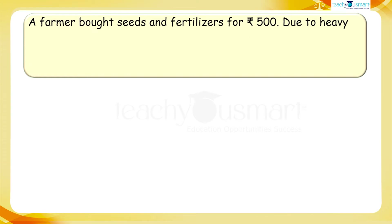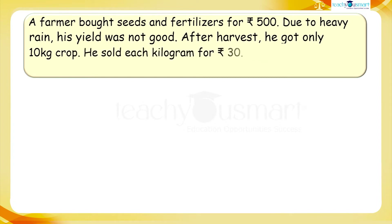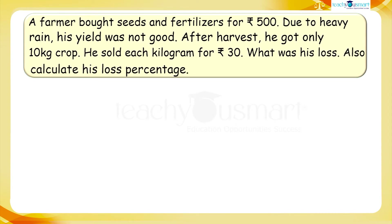A farmer bought seeds and fertilizer for rupees 500. Due to heavy rain, his yield was not good. After harvest, he got only 10 kilograms of crop and sold each kilogram for rupees 30. What was his loss? Also calculate his loss percent.